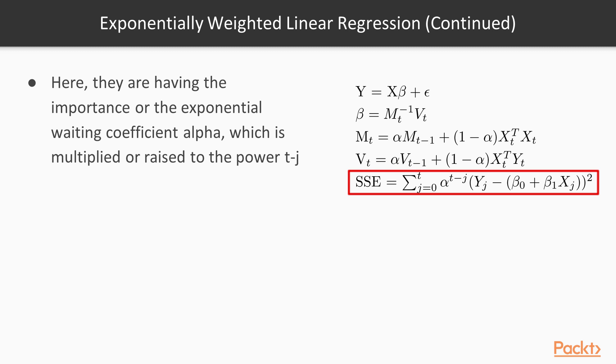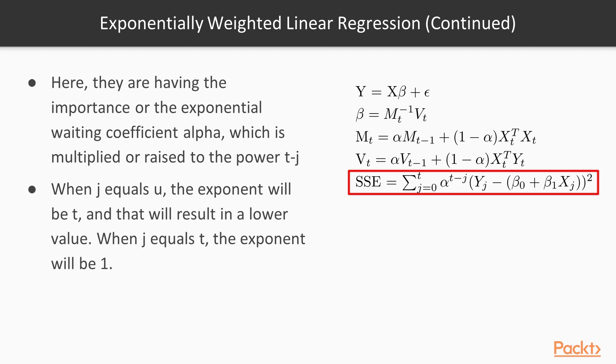So now that we have done some approximations to the coefficients beta, we can use that to calculate the error function or the recursive least squares function. The difference we can notice from the last equation, SSE equals the summation between j equals 0 to time t, is that here they are having the importance or the exponential weighting coefficient alpha, which is multiplied or raised to the power t minus j. So when j equals 0, the exponent will be t and that will result in a lower value. And then when j equals t, the exponent will be 1.